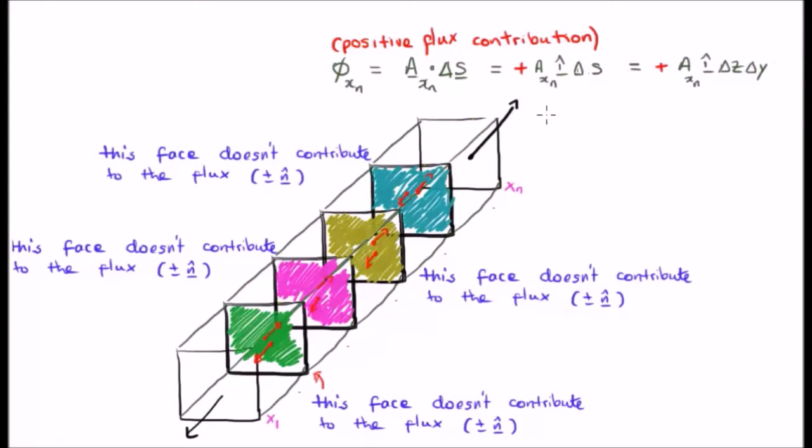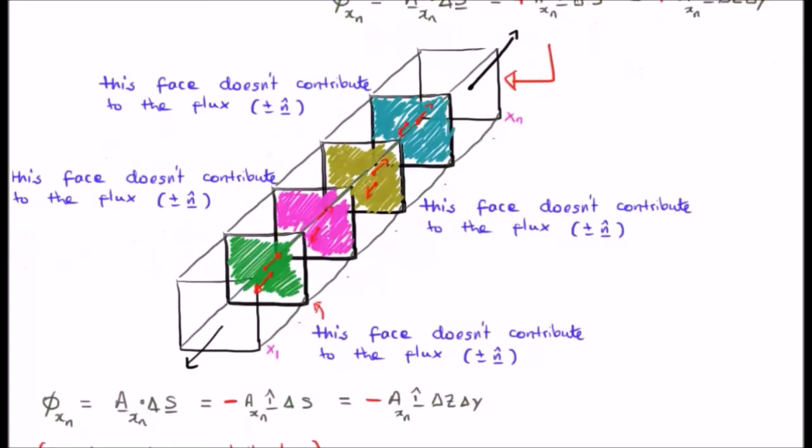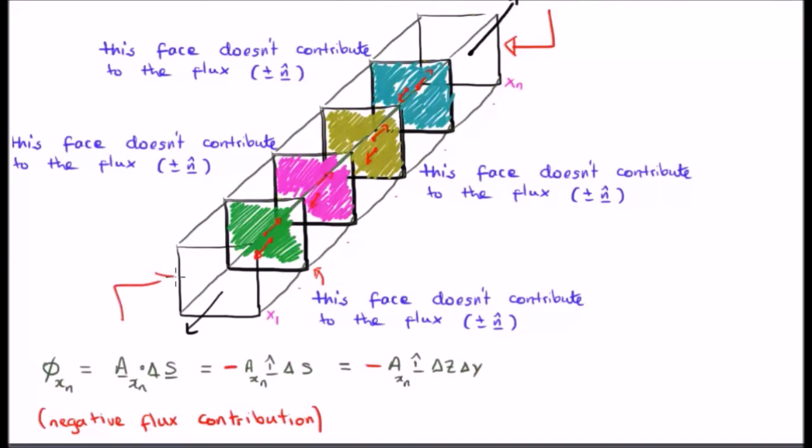And therefore, there is a positive flux contribution here because of the positive i-hat. And there is a negative flux contribution here due to the negative i-hat.